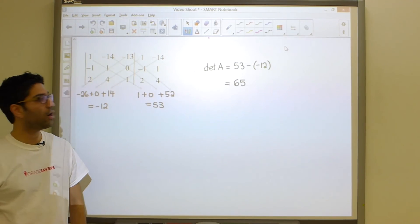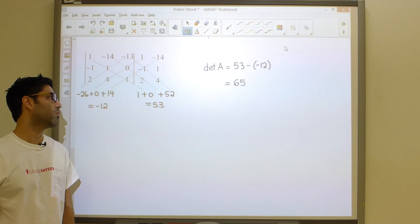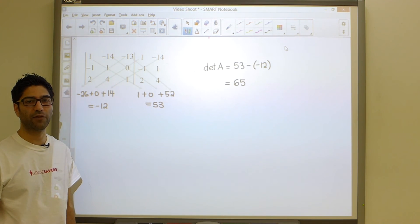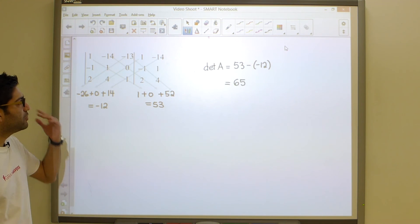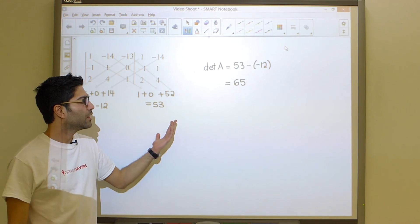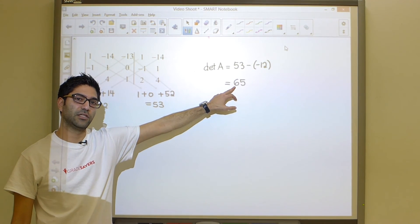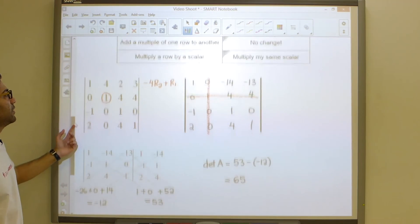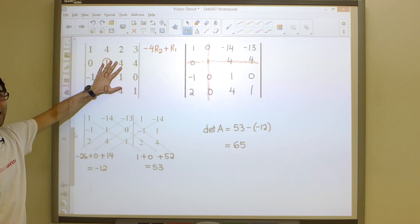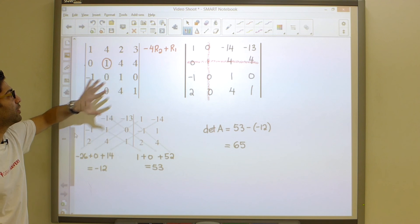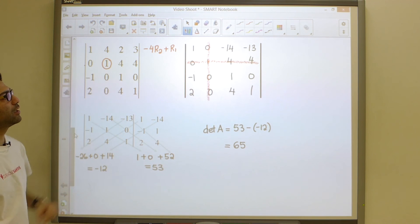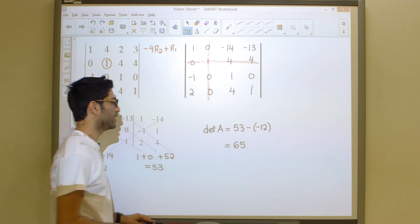This being said, we're almost there. There is one last thing that we need to check before we circle this as being our final answer. It turns out that if you use this technique, your answer is either going to be 65 or negative 65. And you have to figure out which one it is. To do that, you're going to go right back up here and ask yourself, if there were a checkerboard of signs on top of this determinant, would the 1 fall on top of the positive or negative value?